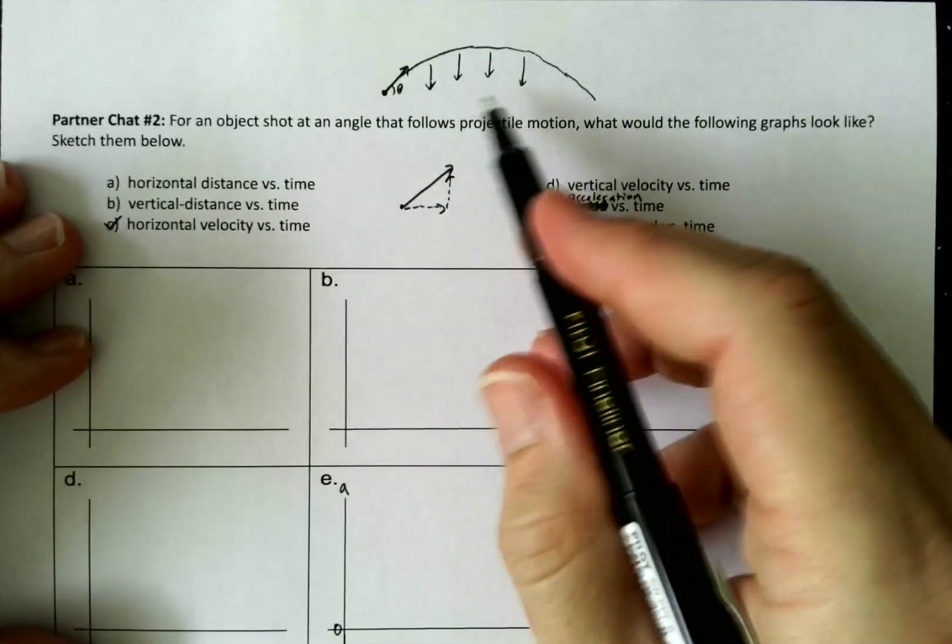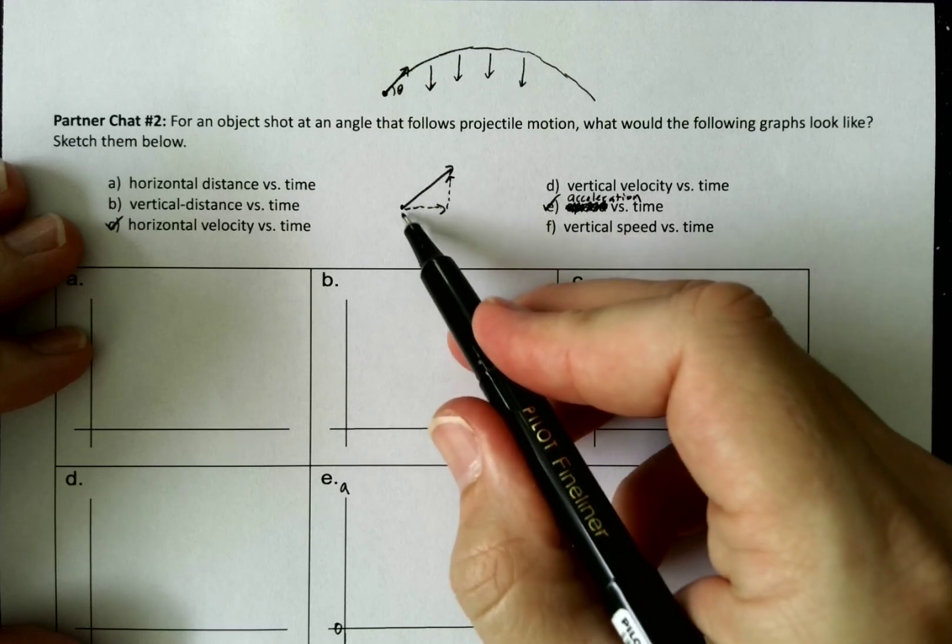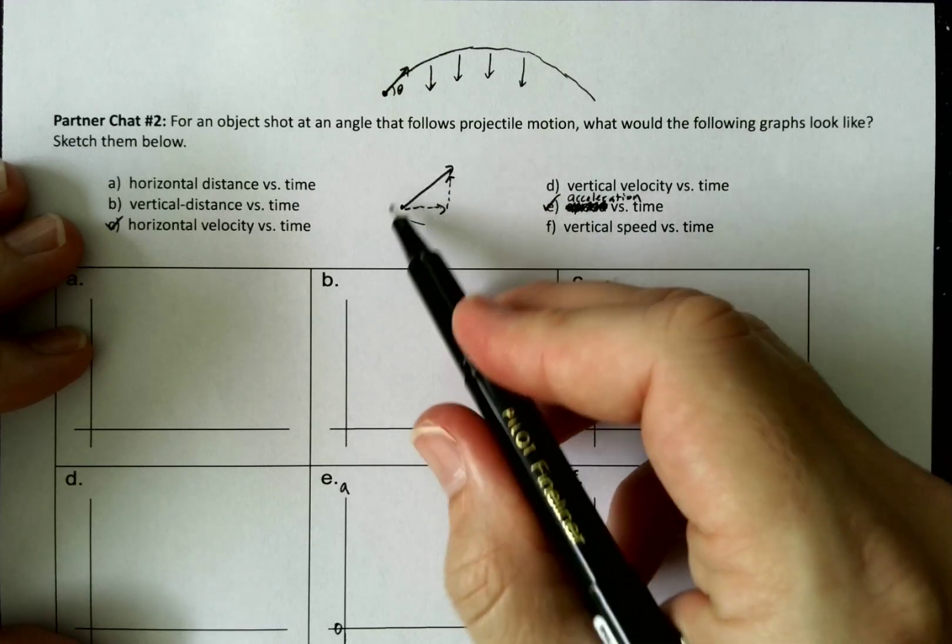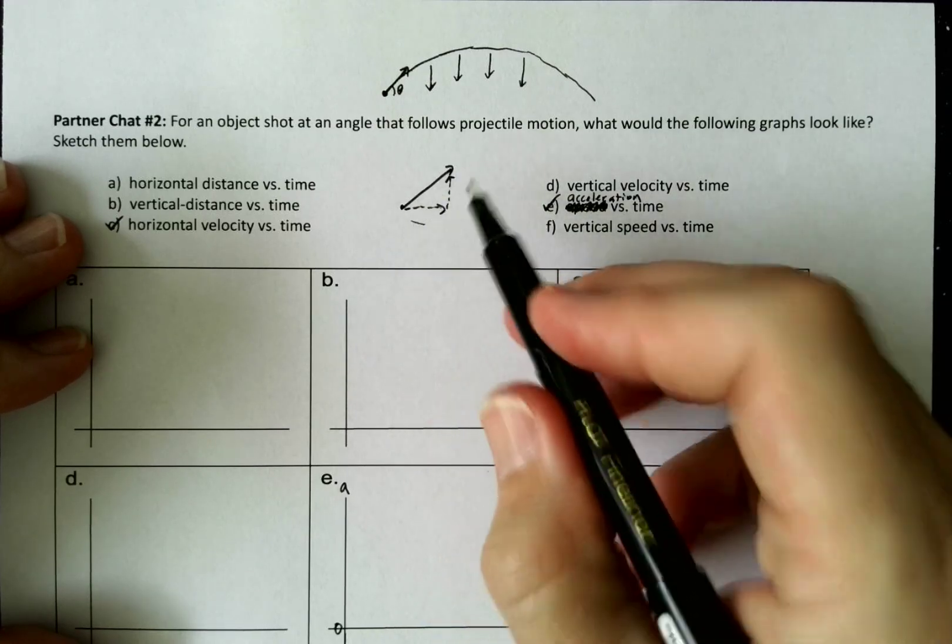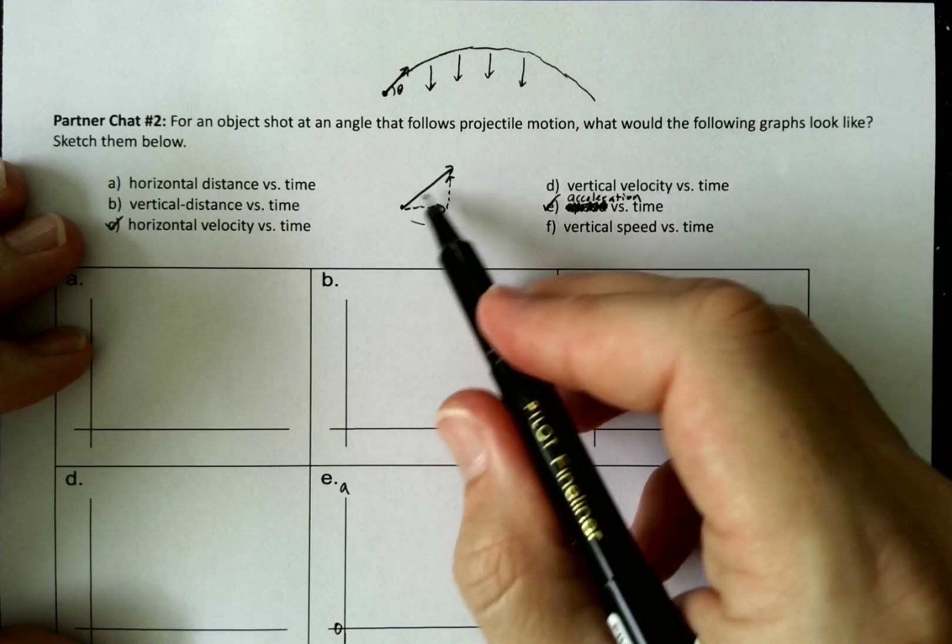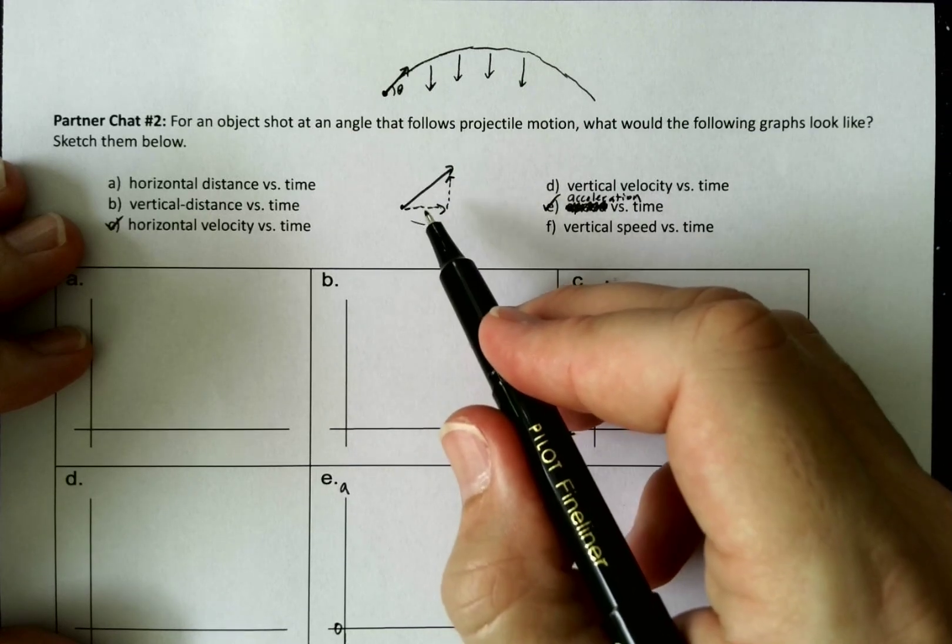Now, because there's no horizontal acceleration, the only acceleration we have is, sorry, horizontally there's no acceleration. So therefore, the velocity should remain constant.